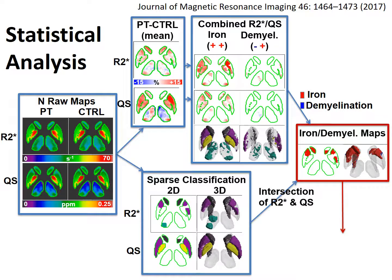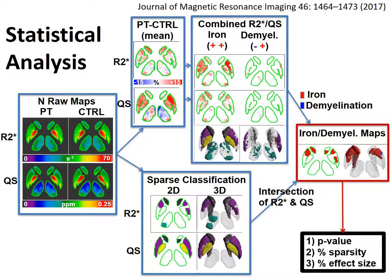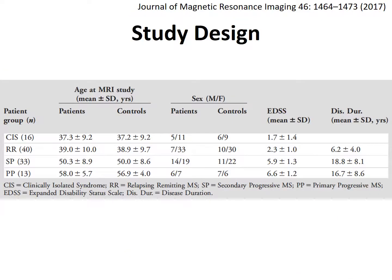We used the identified iron accumulation and demyelination labels and common sparse volumes to produce iron accumulation and demyelination maps for all subjects. We then performed statistical analysis on these maps, obtaining a p-value indicating significance of results, a percent sparsity representing the percentage of the deep brain matter volume that is iron accumulation or demyelination, and an effect size indicating the strength of the observed effect. We applied this analysis framework to the four MS groups and age-matched control groups for each MS group.